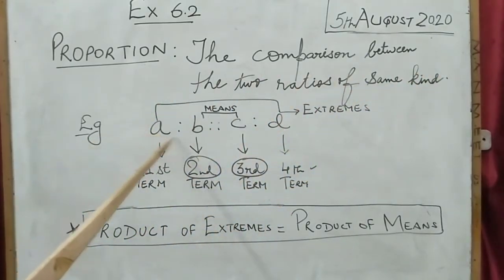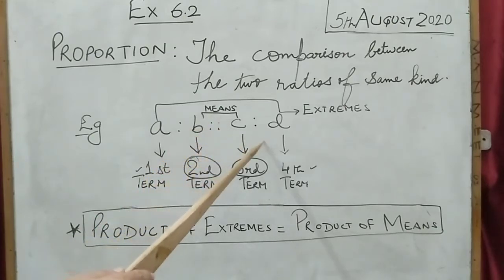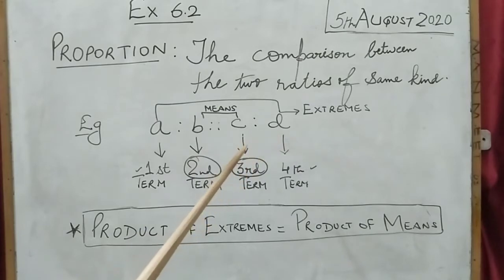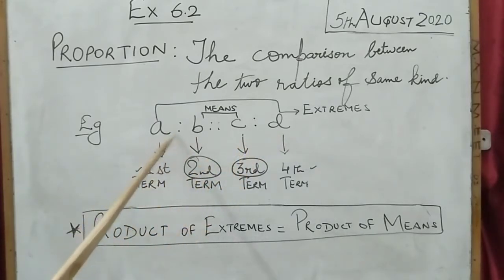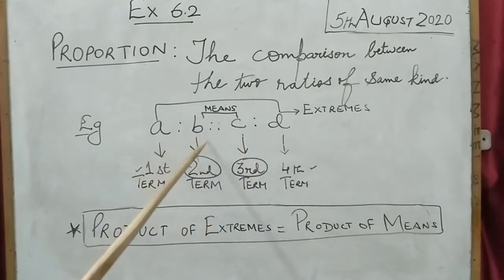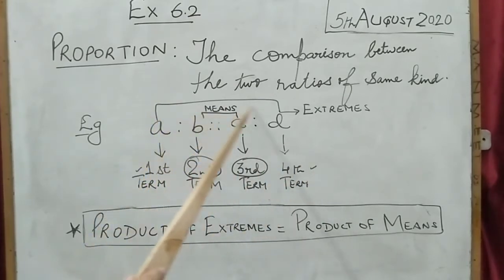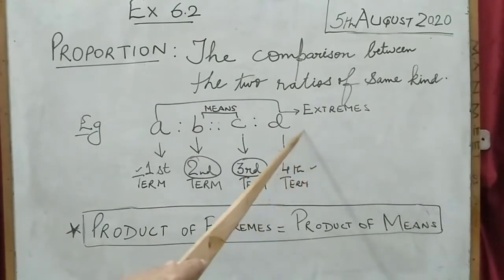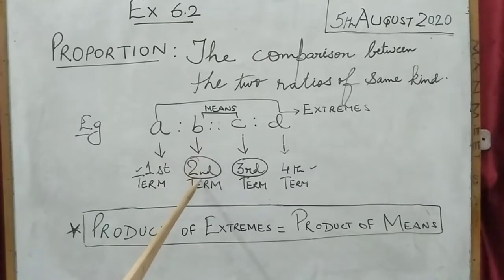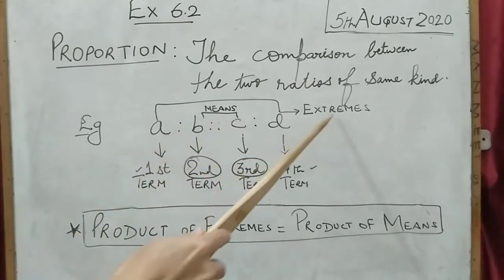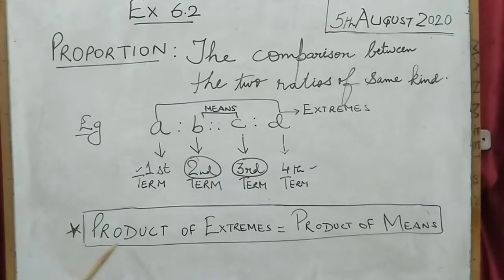Let's take one example: A ratio B, this is the sign of proportion, C is to D. We can say A is to B proportion C is to D. In the last video we discussed two terms — first term and second term — but here instead of two there are now four terms: first, second, third, and fourth. The first and fourth terms are known as extremes, and the middle terms — second and third — are known as the means.